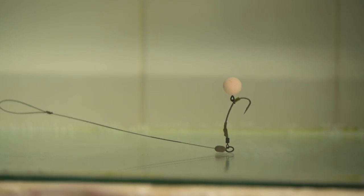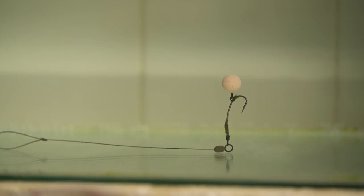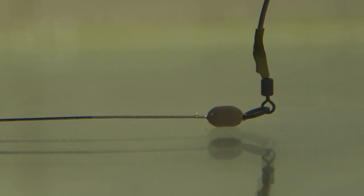The smaller 0.3g beads are best when combined with 12mm pop-ups and smaller hooks like 6s and 8s, whereas the larger beads are best used with more buoyant pop-ups and larger hooks.